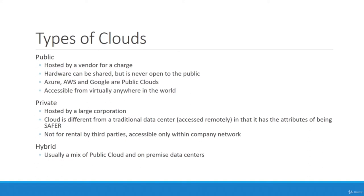Azure, Amazon, and Google are the most famous public clouds, accessible from virtually anywhere in the world. That's one reason why it's called cloud computing — the data centers are far away but can be accessed from virtually anywhere, hence the analogy of the cloud.